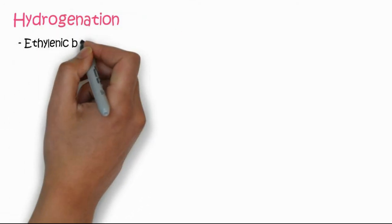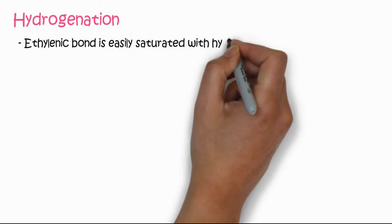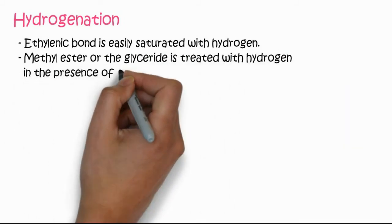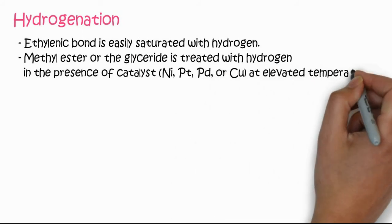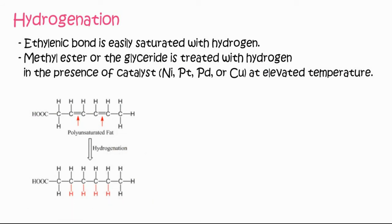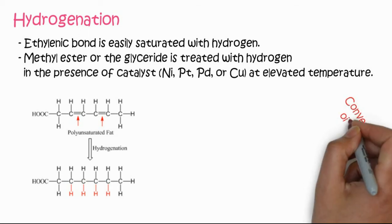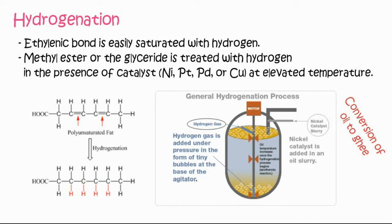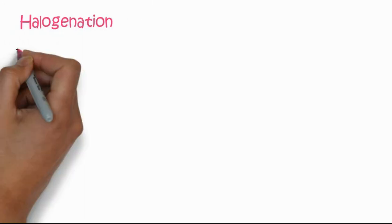The next reaction is hydrogenation. The double bond or ethylenic bond is easily saturated with hydrogen. The methyl ester or glyceride is treated with hydrogen in the presence of a catalyst like nickel, platinum, or copper at higher temperature. The double bond of a polyunsaturated fatty acid is saturated upon hydrogenation. This is a common reaction for the conversion of oil to ghee in industry, using a hydrogen and nickel catalyst in a mixing tank.